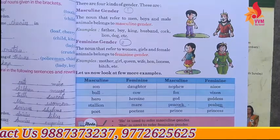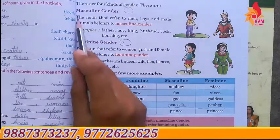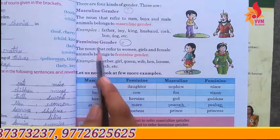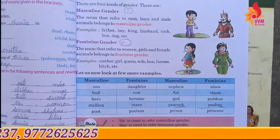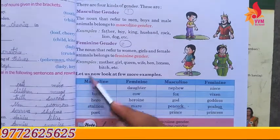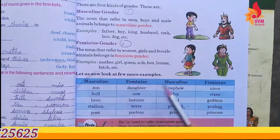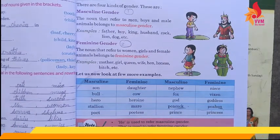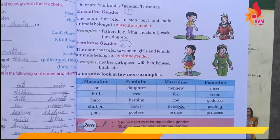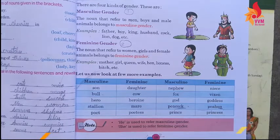So your homework is: you have to learn the definitions of masculine gender and feminine gender. You also have to read and learn this table, and learn the spellings as well. If you don't understand or have any problem, please ask. Okay, bye.